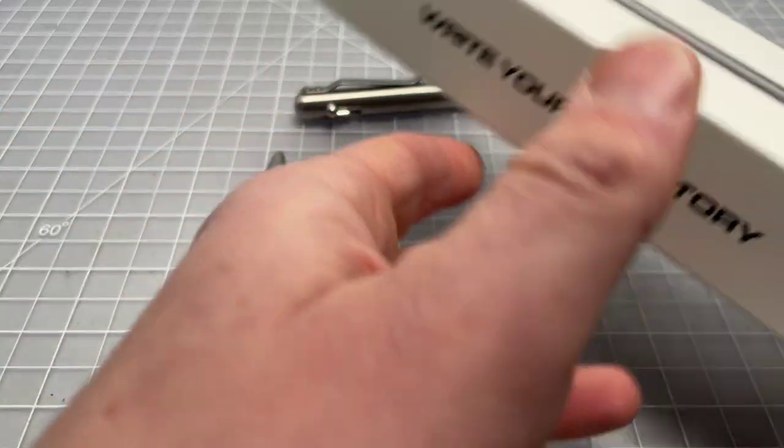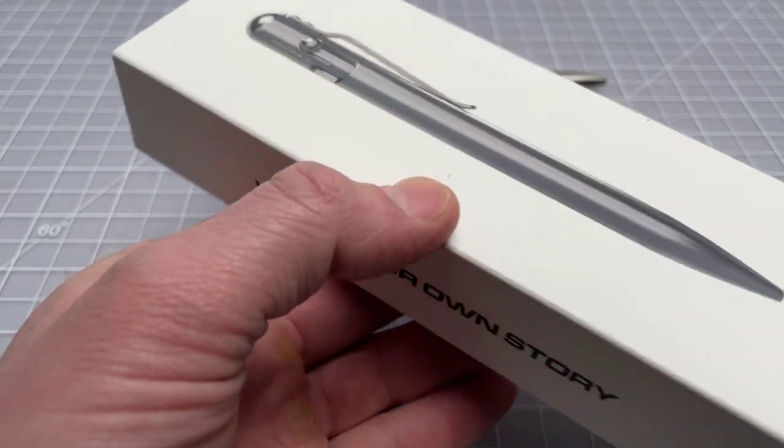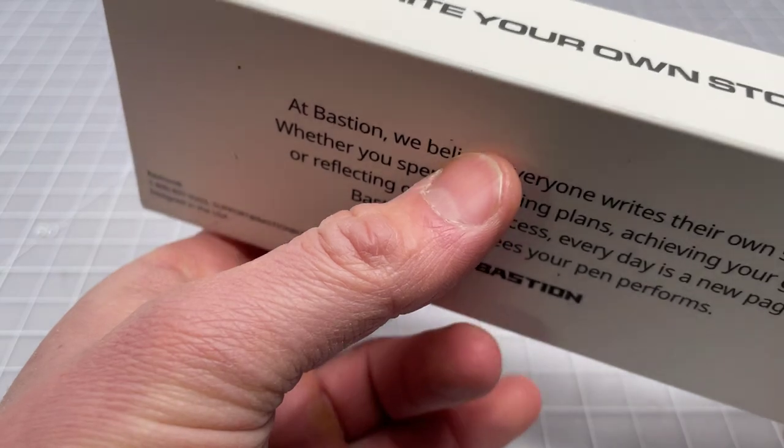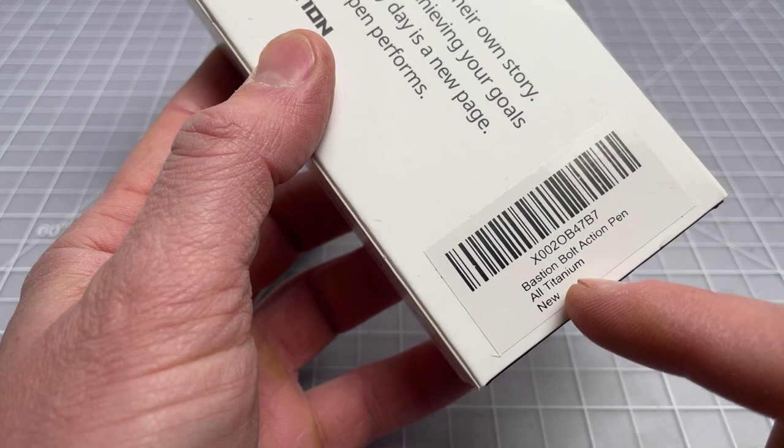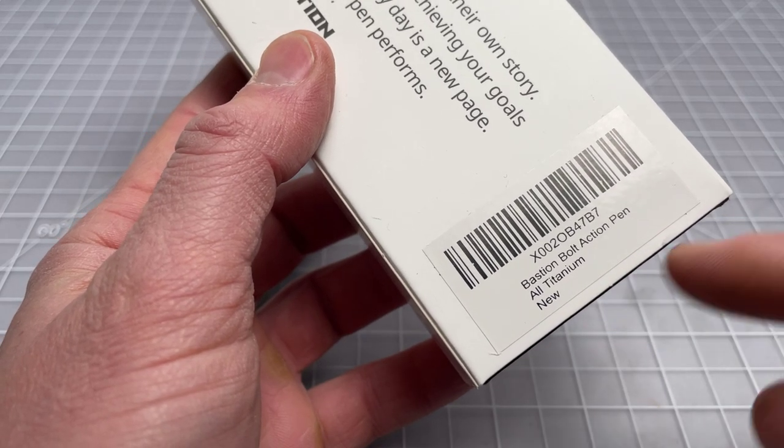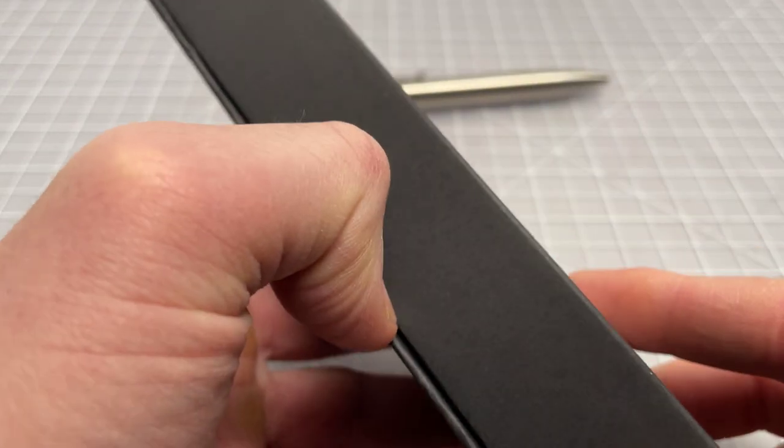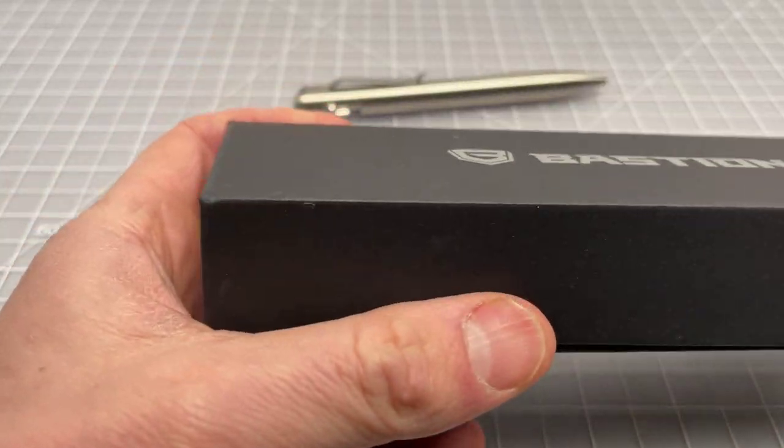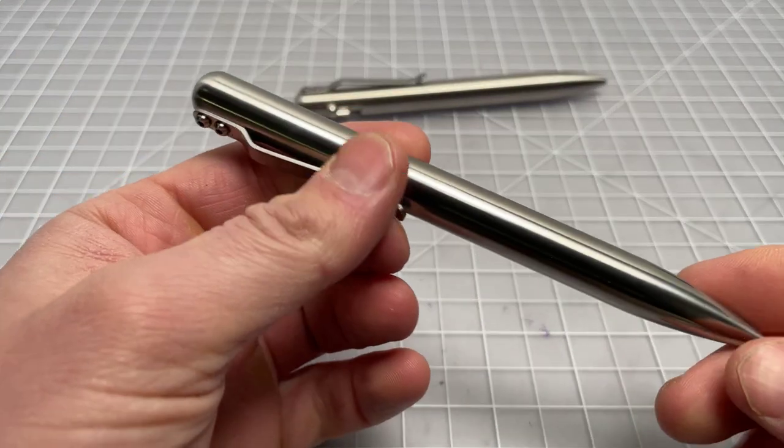The packaging is very simple. It's just a Bastion pen. I don't even think they changed the box from the titanium model to the stainless steel and aluminum models. The only difference would be this little sticker here. It says Bastion bolt action pen, all titanium new. And then there's really nothing else to the packaging. There's not even an instruction manual or anything like that.